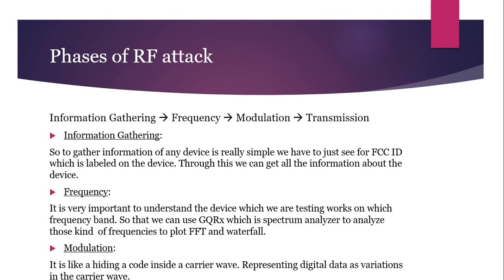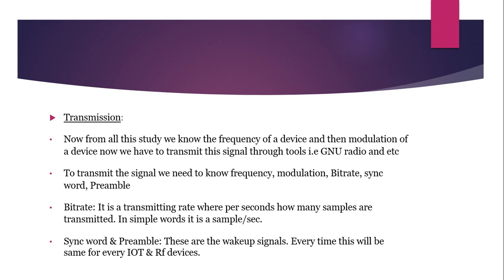Next comes modulation. It is like hiding a code inside a carrier wave — it represents digital data as variations in that carrier wave. Then comes transmission. From all this study we know the frequency and modulation of a device. Now we have to transmit this signal through tools like GNU Radio and others. To transmit the signal we need to know the frequency, modulation, bit rate, sync word, and preamble. Bit rate is the transmitting rate — how many samples are transmitted per second, in simple words, samples per second. Sync word and preamble are the backup signals, and every time these will be the same for every IoT and RF device.